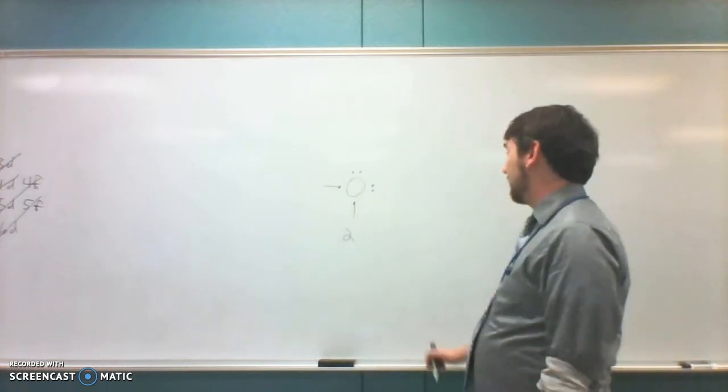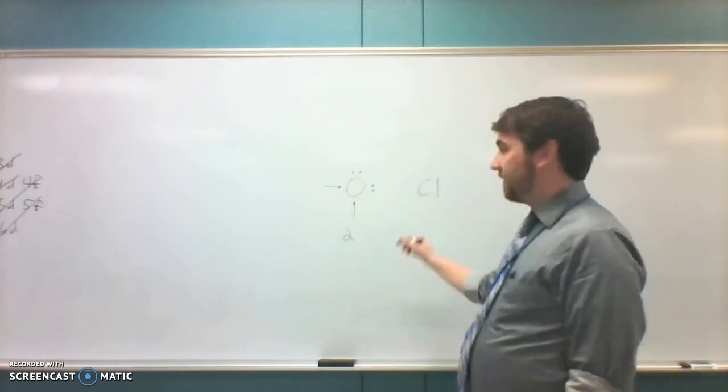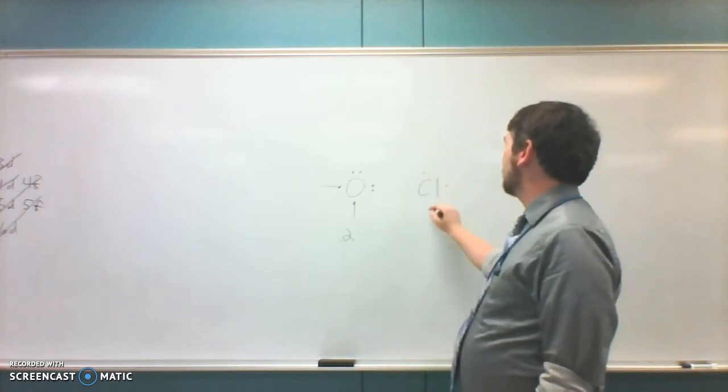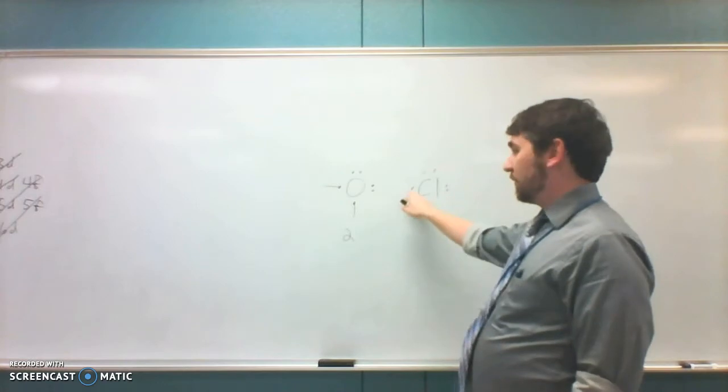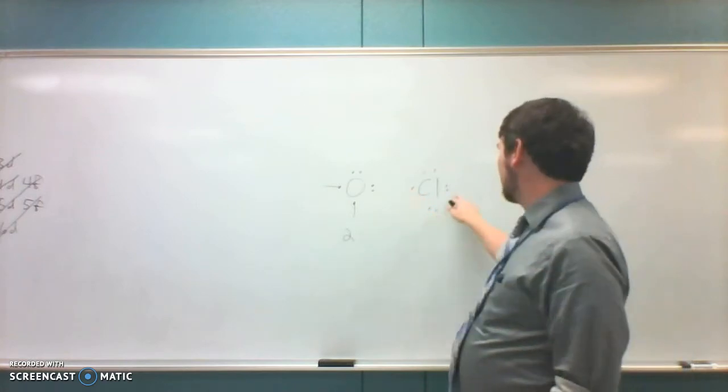If I'm looking at something like chlorine, it's in column seven. One, two, three, four, five, six, seven. Chlorine has one unpaired electron. The other electrons are already paired up. Chlorine will form one bond.